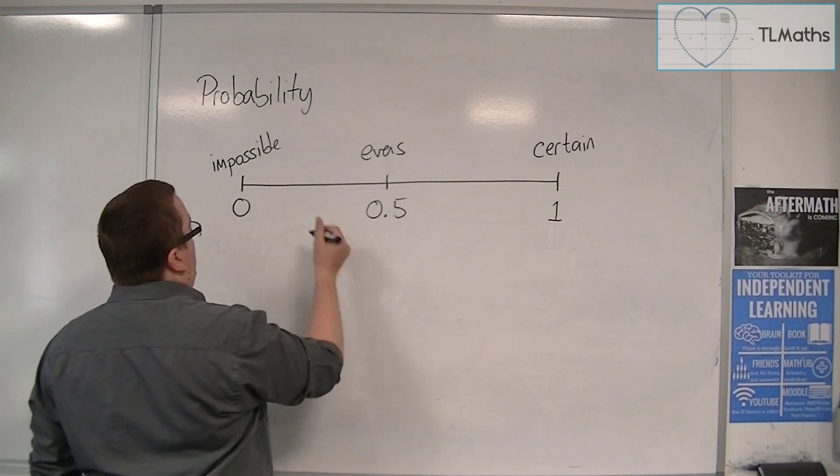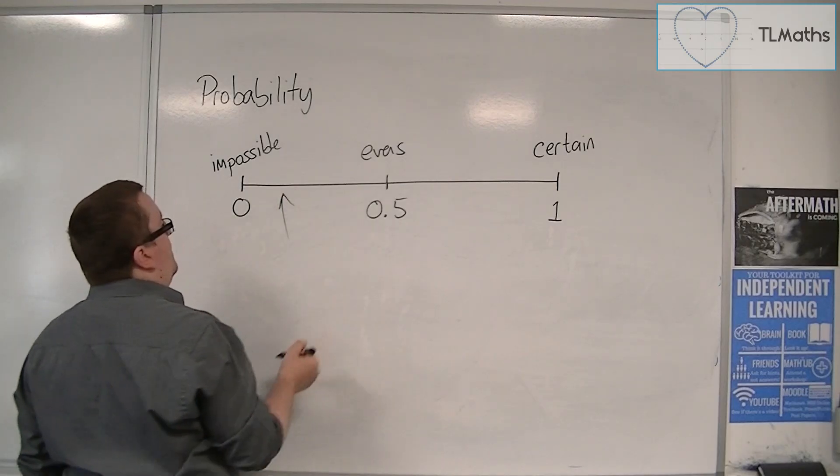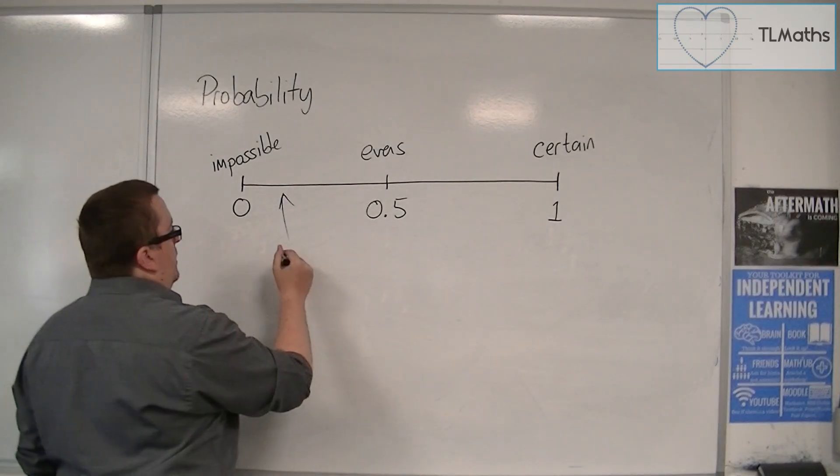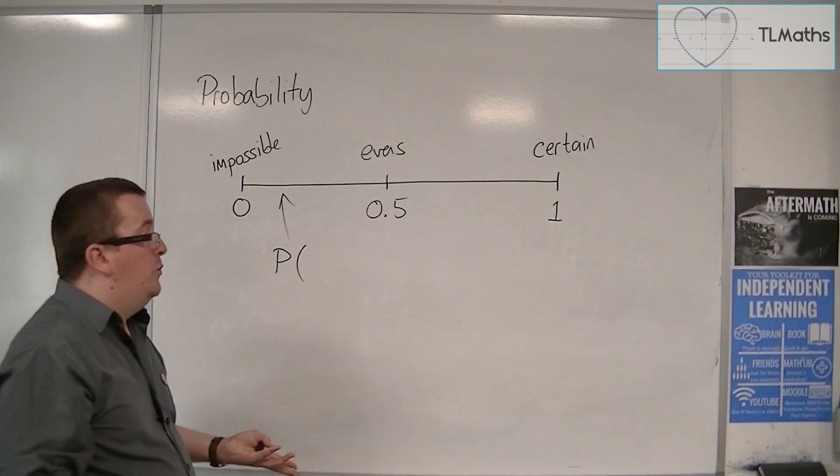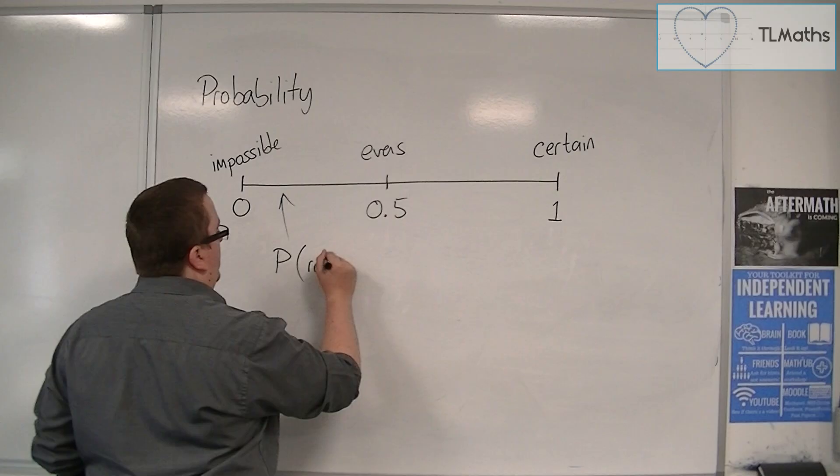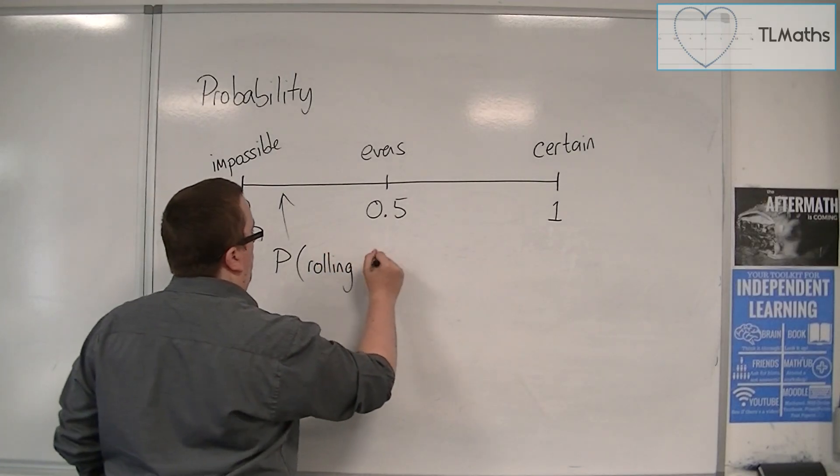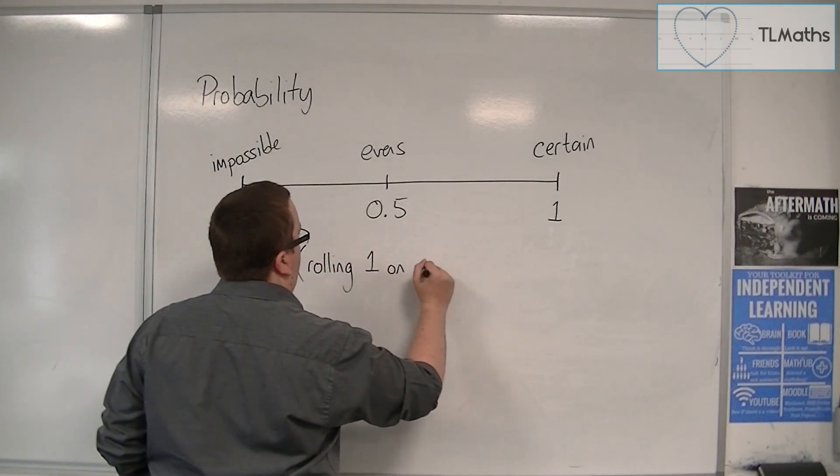And so, that is roughly there. So, this is the probability, and this is the notation that we can use, of rolling 1 on a die.